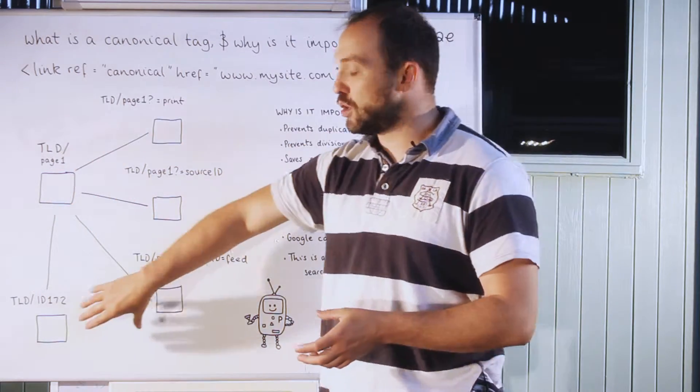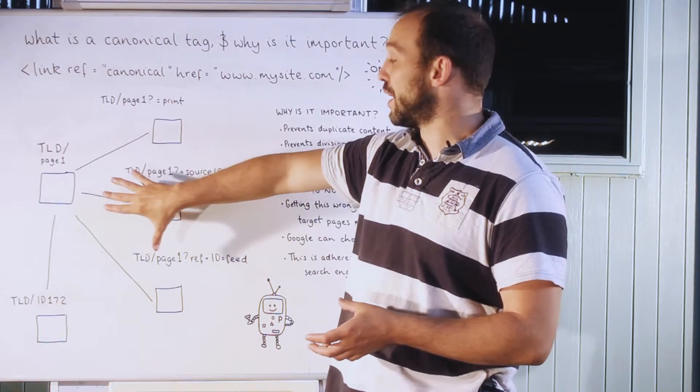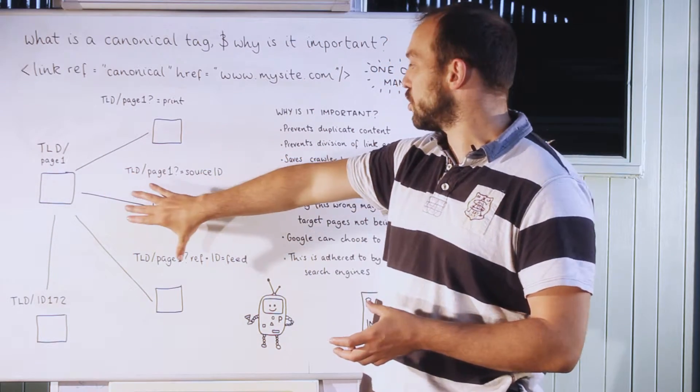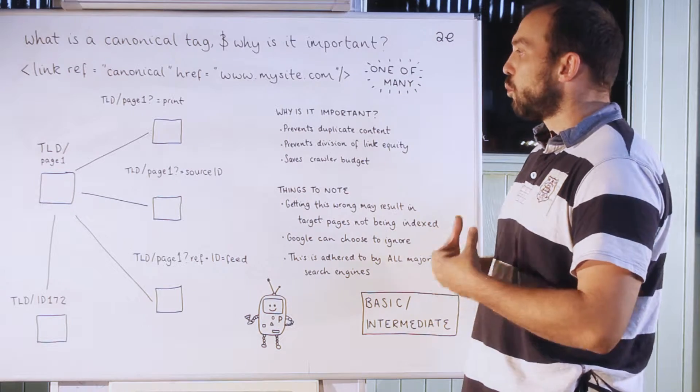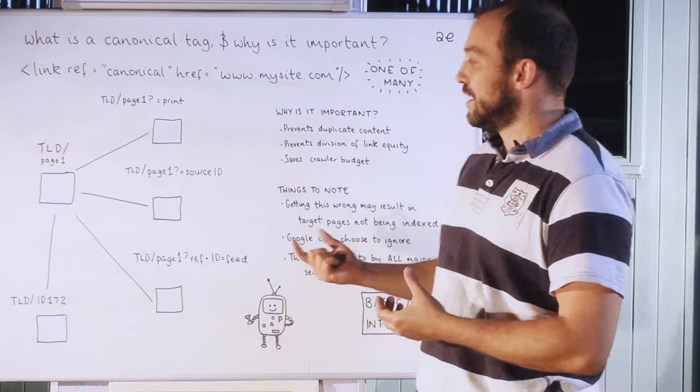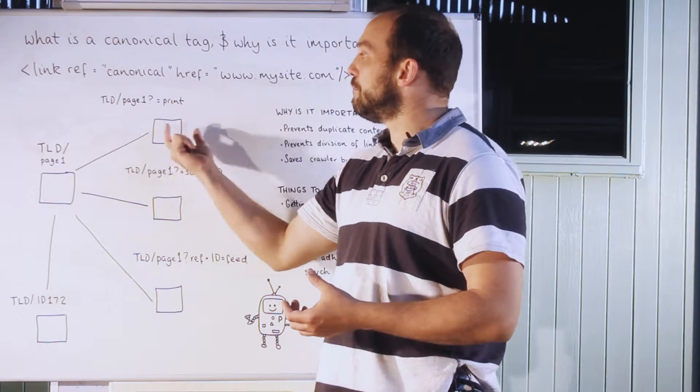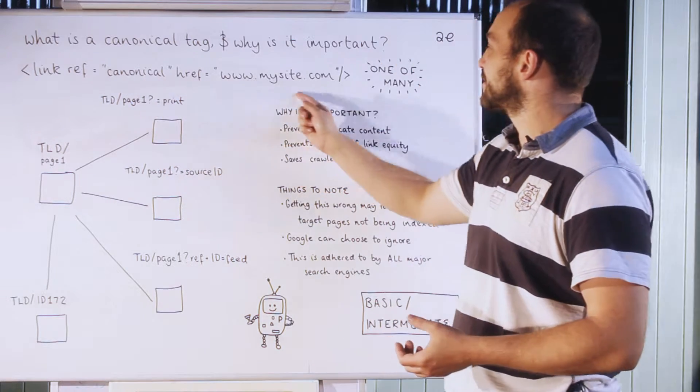So suddenly you can quite easily get one version of the page duplicated numerous times, even though you're not doing anything really to the CMS to make it do that. So what canonical tag does is say this is the one true page of many. So generally looks like this in the code.